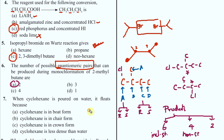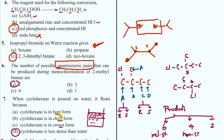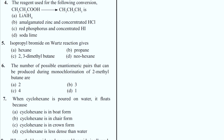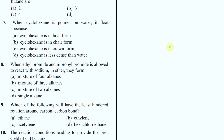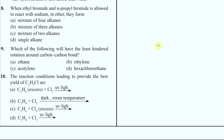When cyclohexane is poured on water, it floats. It is actually a funny question. Cyclohexane floats because it has lower density. You do not need to know about board, chair and crown conformations for this. Board does not mean it will float. It is a straightforward memory-based question - anything that is less dense will always float. Example: oil and water.